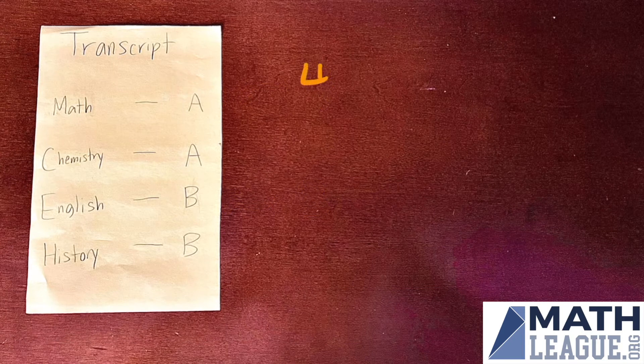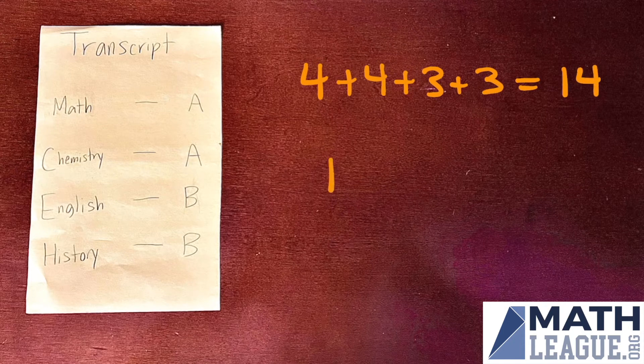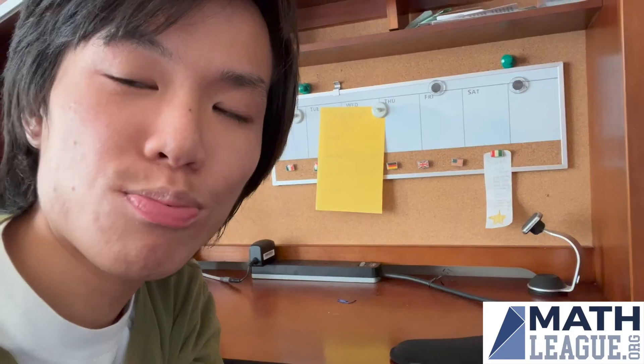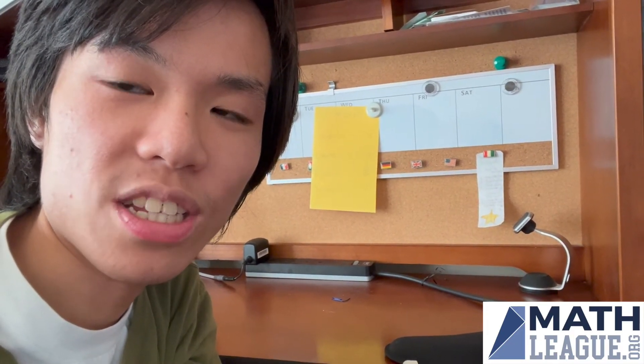Ethan got two As and two Bs, so we compute his GPA by taking the average of 4, 4, 3, and 3. Since these numbers sum to 14, Ethan's GPA is 14 over 4, or 3.5. Now this problem wants us to find the greatest possible increase of GPA between Ethan's semesters.